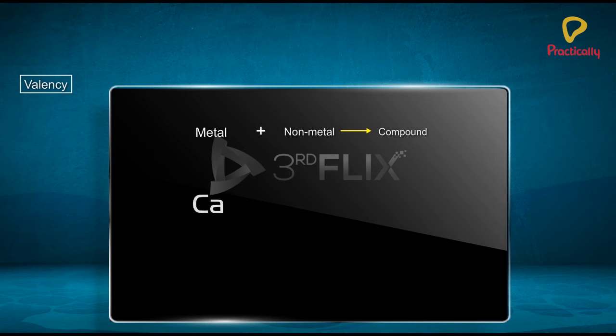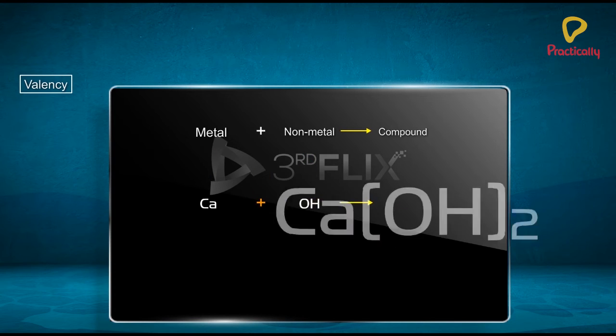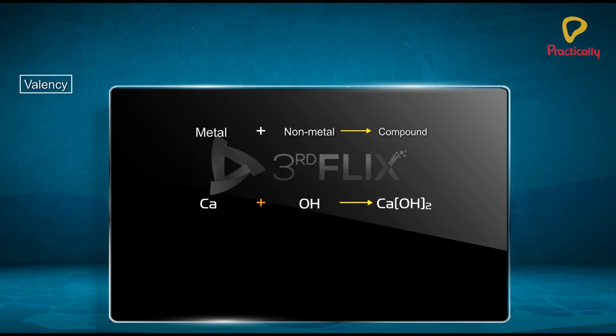In case of compounds comprising polyatomic ions, the ion is written in a bracket before writing the number to indicate the ratio.